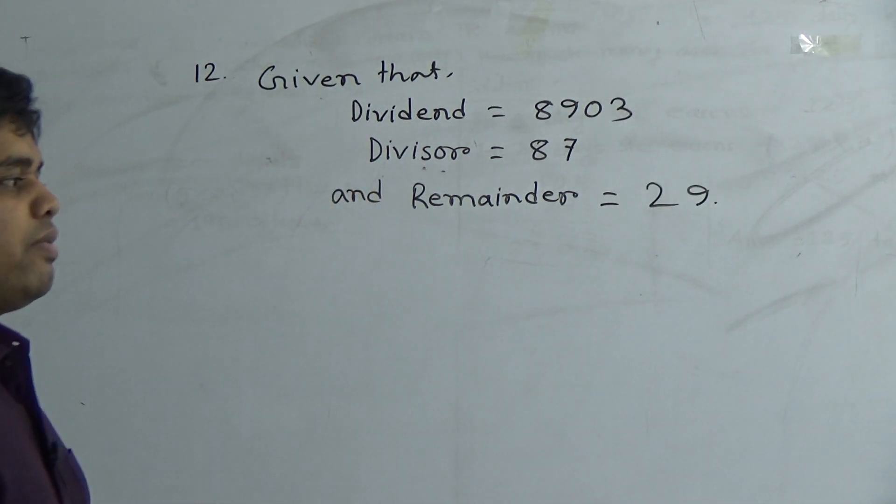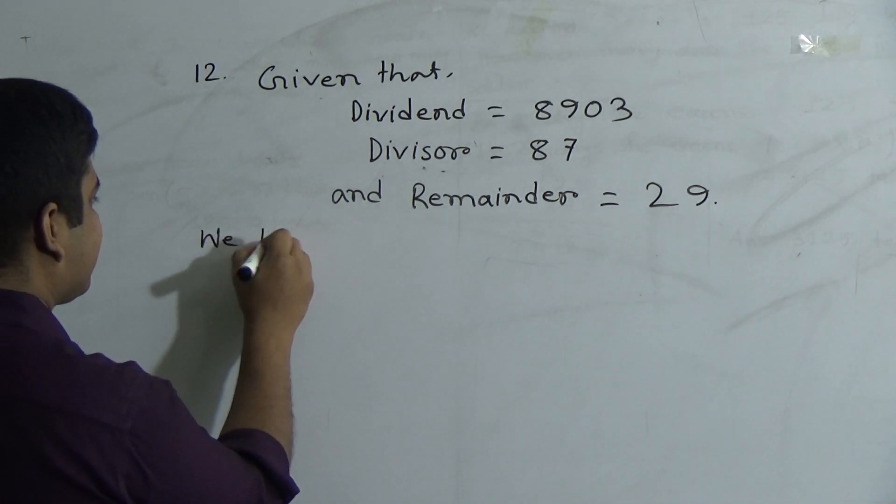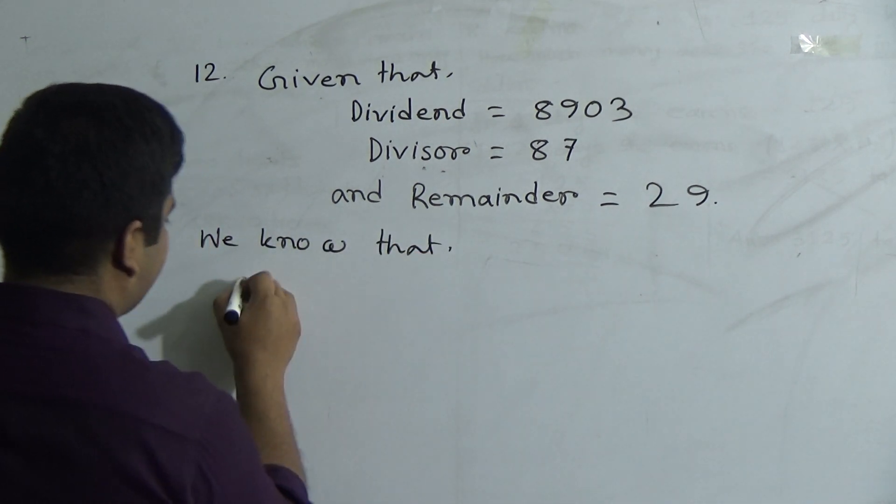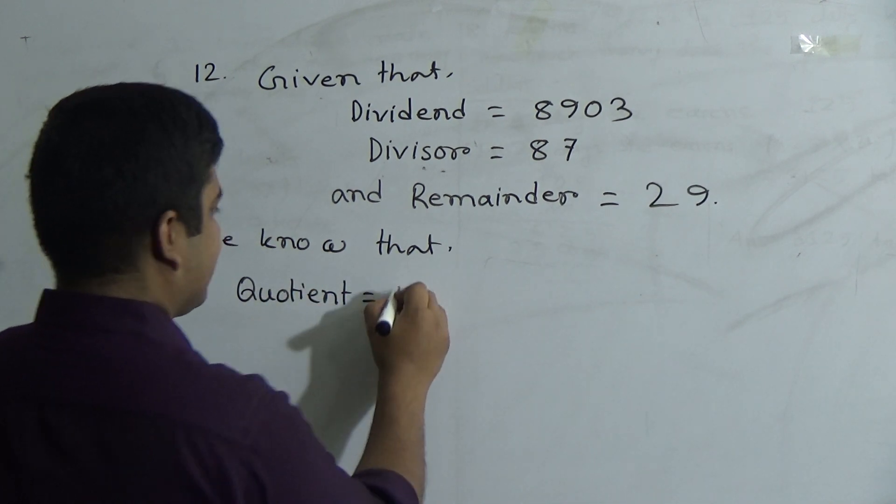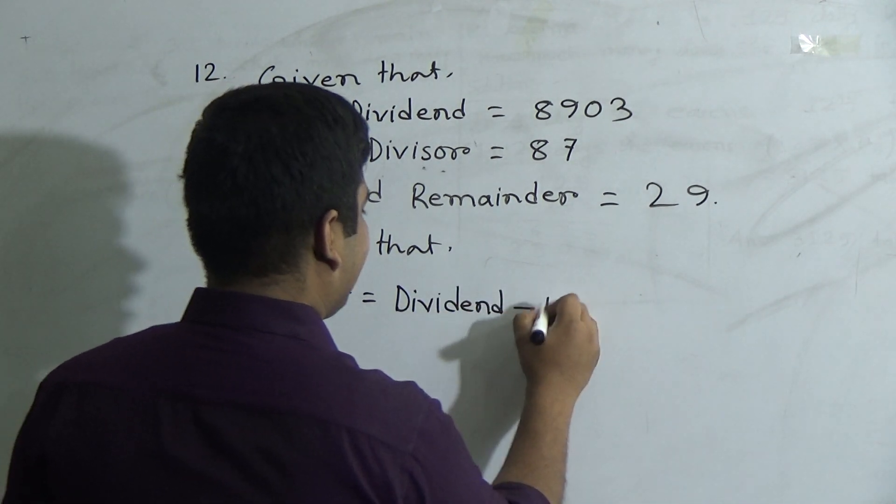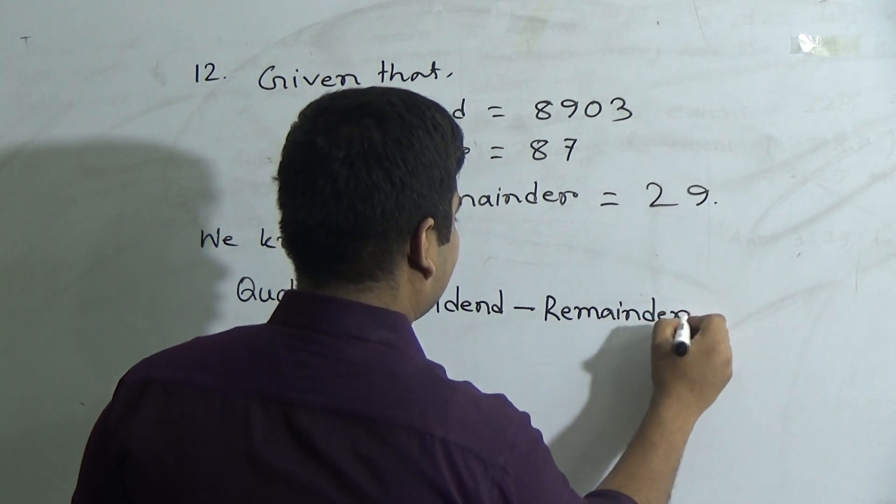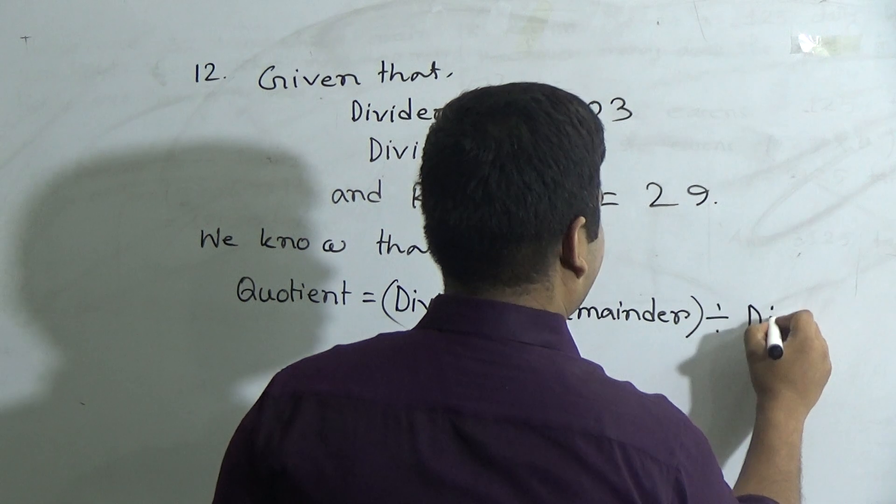We need to find out the value of quotient. So first of all, we write: we know that quotient equals dividend minus remainder divided by divisor.